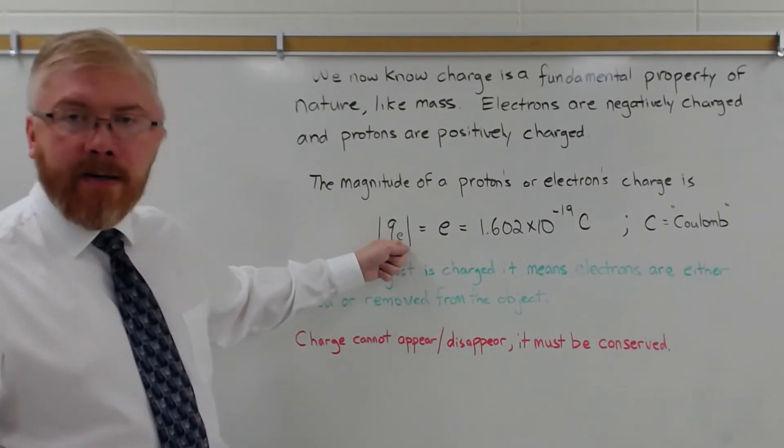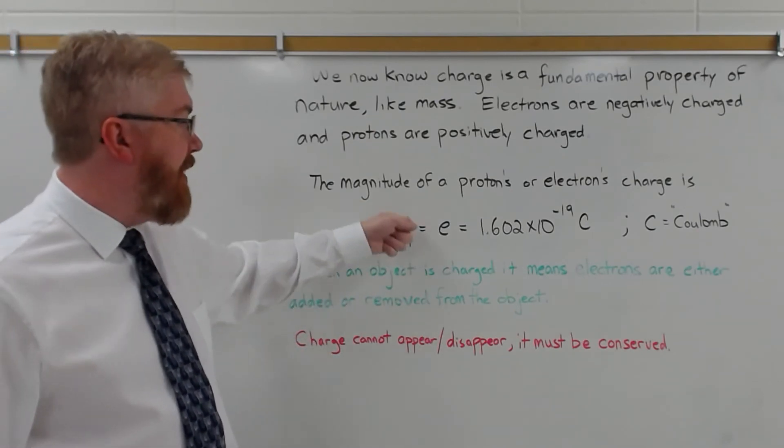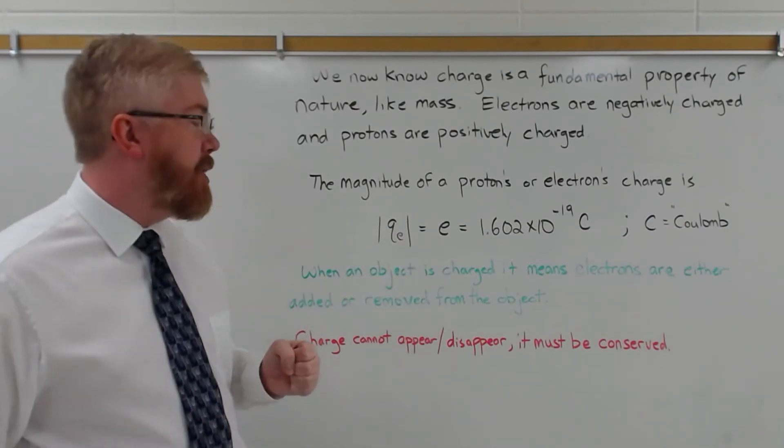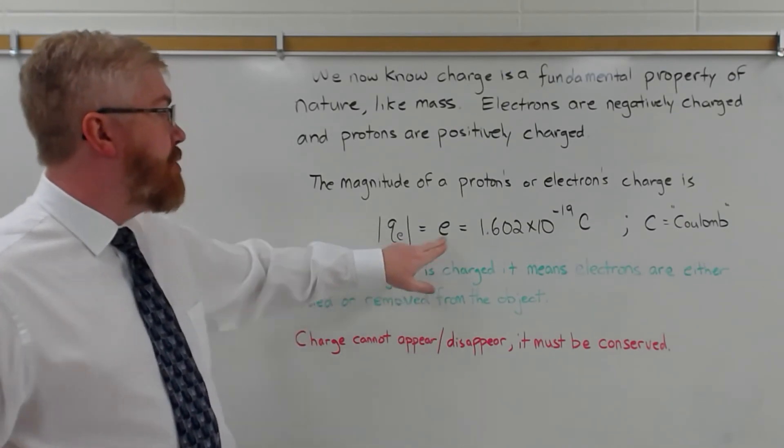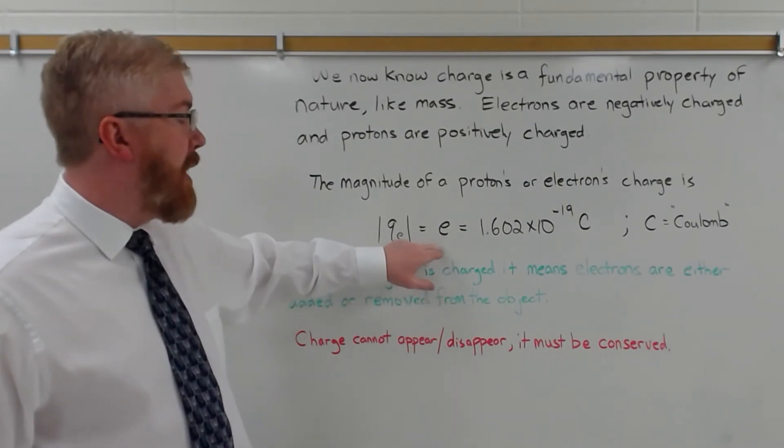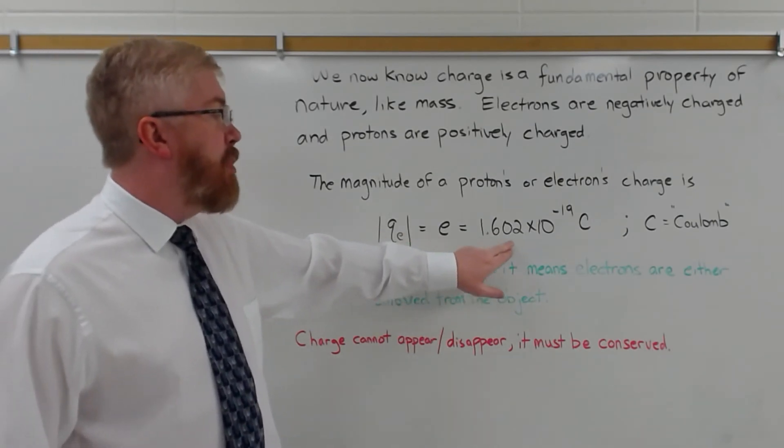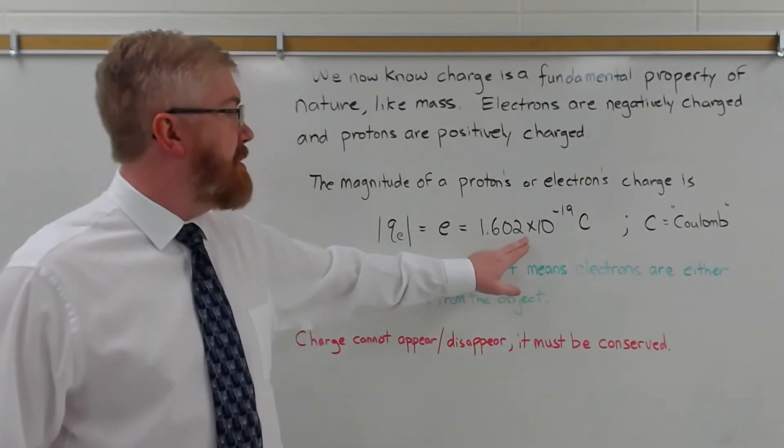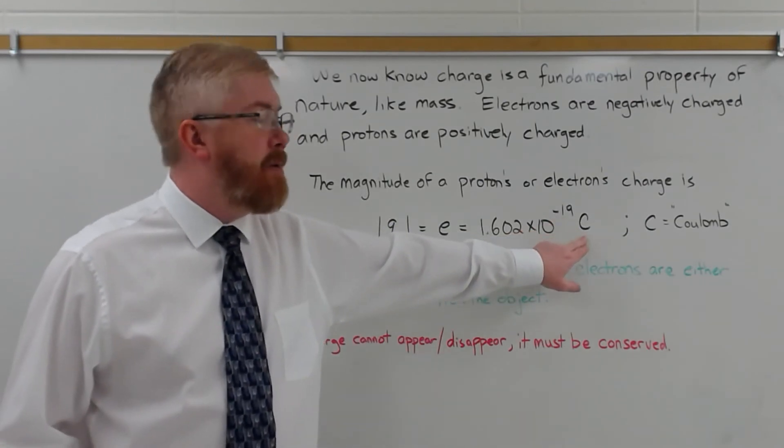The charge e, usually for an electron, the absolute value, because we want to know what the magnitude of the charge is. Sometimes this quantity is just represented by e, the letter e, lowercase e. It's equal to 1.602 times 10 to the minus 19 Coulombs.